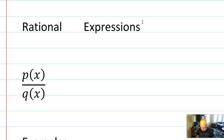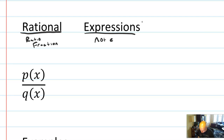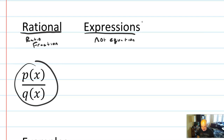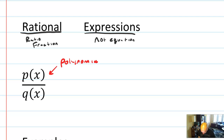Let's understand what a rational expression is first. Rational means it's a ratio, or a fraction — same as rational numbers. Expression means not an equation. So we're dealing with things right now that are not really equations, but that are fractions of polynomials. The most general rational expression is something of the form p(x) divided by q(x), where both p and q are polynomials.